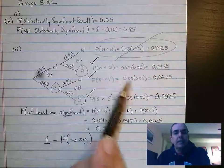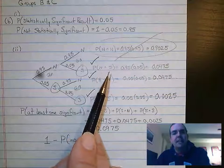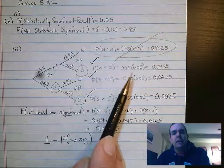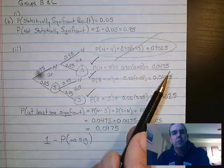Then I can do that for all the other ones. So this is the probability of being not significant and then significant. So that's 0.95 times 0.05, which is 0.0475.